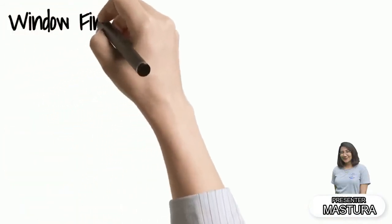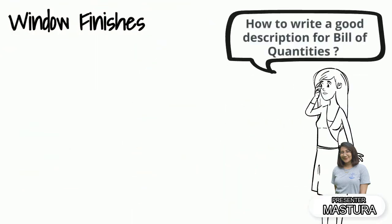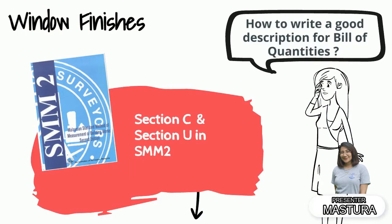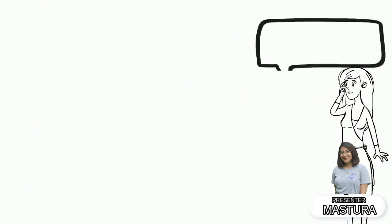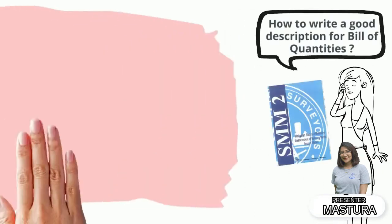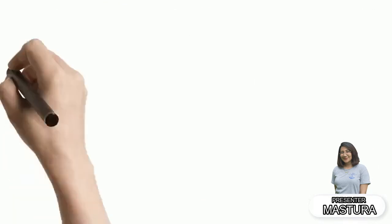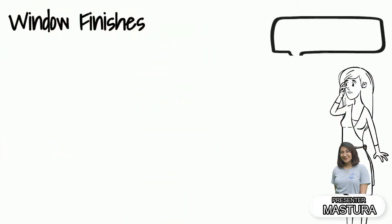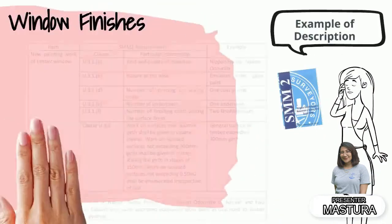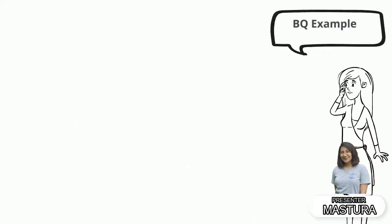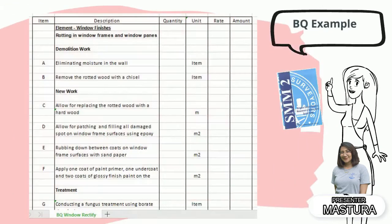To write a good description for BQ, you need to refer to SMM2 in Section C and Section U. This is an example of how to write a description for window finishing work. Lastly, here is an example of a BQ for window finishes.